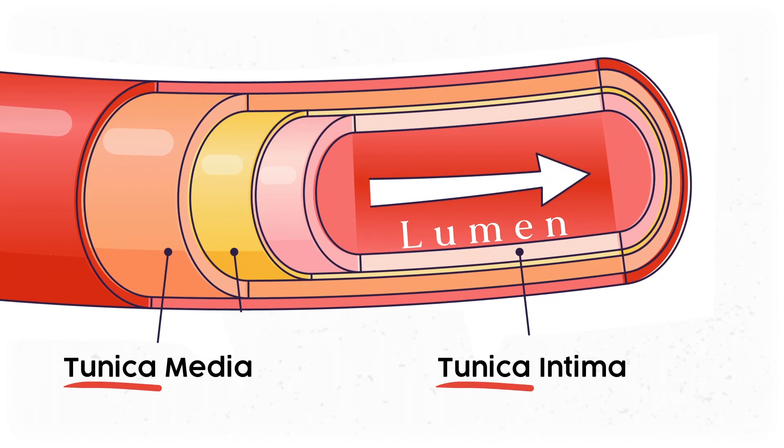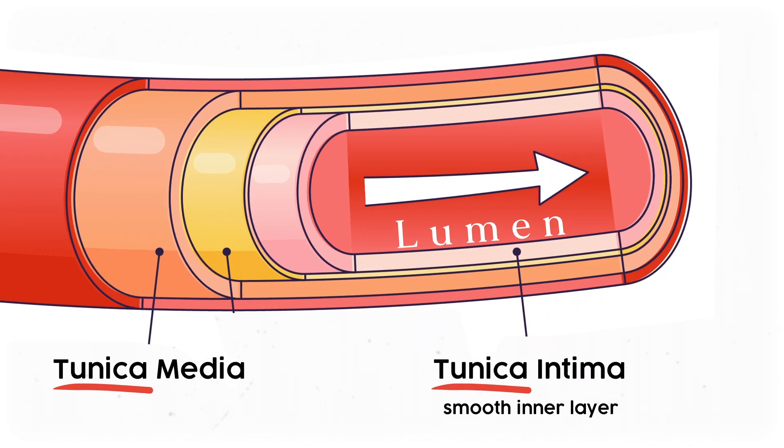The tunica intima is a thin layer of cells meant to be smooth and accommodate the flow of blood through the vessel. It's kind of like wearing your base layer or undershirt — it's flexible and reduces friction between your skin and your heavier layers, but it doesn't offer a ton of protection by itself.